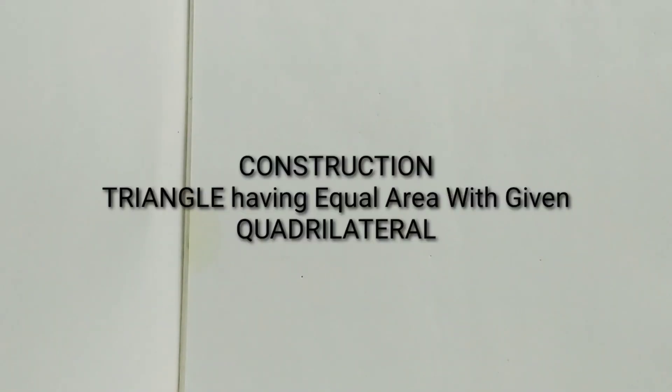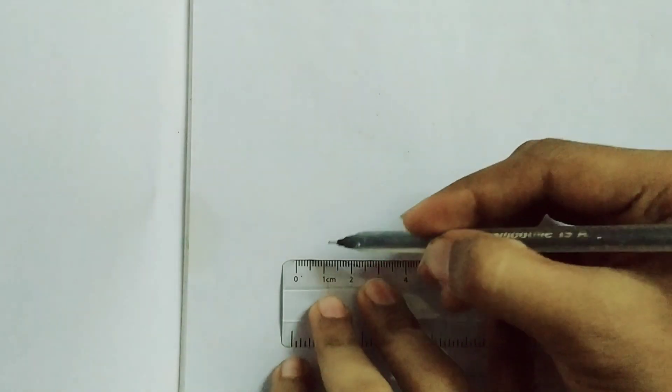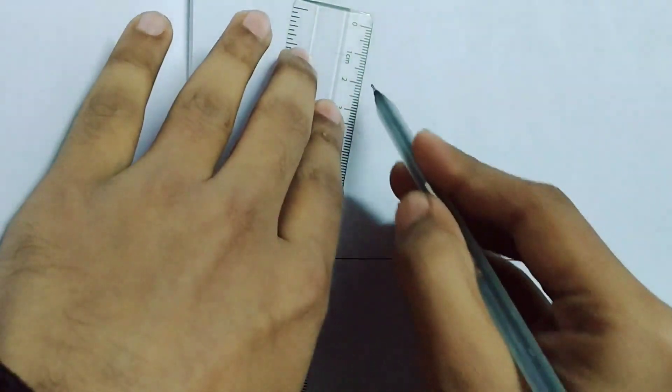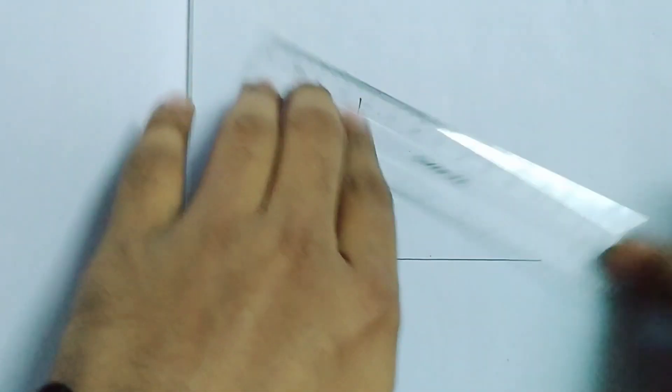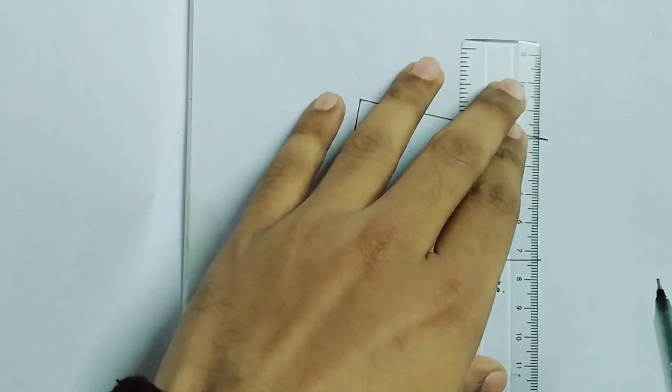So friends, first of all we will draw one quadrilateral of any kind. If in the question the sides, diagonal, or one angle is given, then by taking them you have to draw first of all one quadrilateral, then we will draw the triangle whose area will be same with that given quadrilateral. I am randomly drawing one quadrilateral, you can take any kind of quadrilateral, that does not matter.